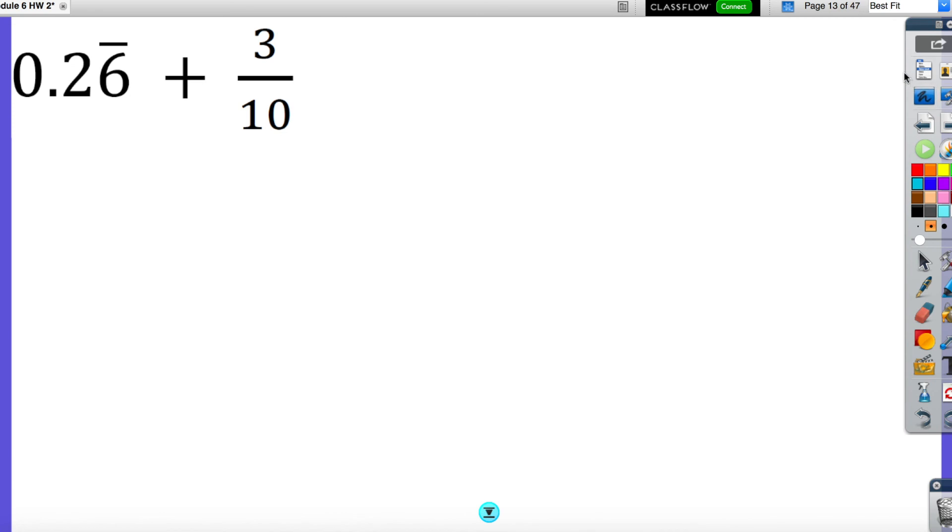This one's a tad different because I have 0.26 with just the 6 repeating plus 3 over 10. Now there's two things you can do here. You can turn this into a fraction and then add them, or you can turn this into a decimal and then add them. So on this example, I'm going to do the second one.